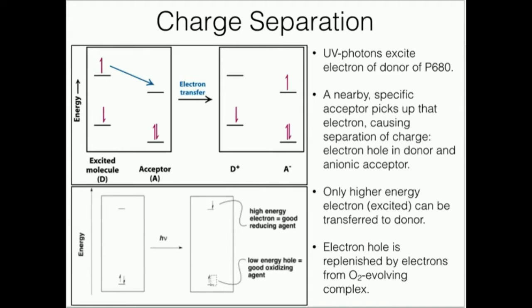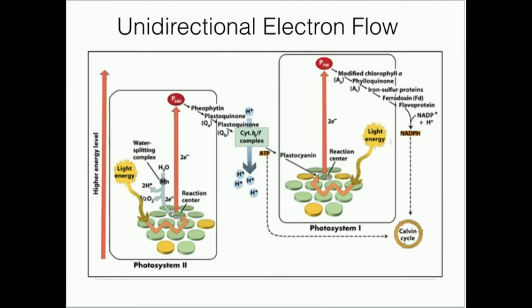Now hopefully this makes sense. We start off with the donor. These are both for the donor. Donor has low-energy electrons paired up. You get UV photons that excite or energize this electron up to the excited state, as you see here, and this electron then can be transferred to a nearby acceptor. In the case of Photosystem II, that acceptor is pheophyton.